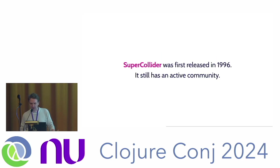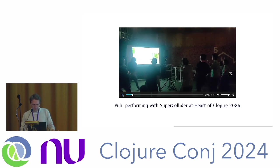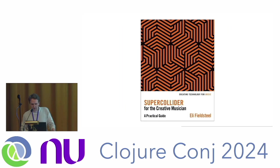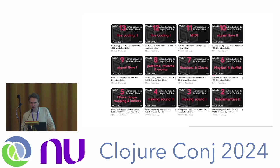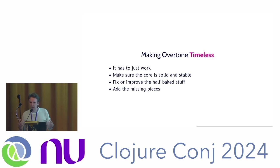So let's talk about timeless software. SuperCollider has been around since the 90s and still has an active community. Just last month at the Heart of Clojure conference, there was a Finnish artist named Pulu who did a live performance using SuperCollider. There's a book about SuperCollider that came out this year, and the same guy makes tons of YouTube videos, which is really great for us and for Overtone. But to make it timeless, it has to just work — it needs a stable, solid core. We need to fix a lot of the half-baked stuff that's in there. The people who originally started Overtone, Sam and Jeff, worked on it really hard for a couple of years — they clearly had a big vision — and then at some point they just dropped it and went elsewhere. We're still figuring out with some of the stuff in there what they were exactly thinking. We need to be backwards compatible the way that Clojure tends to be, but we also need to allow ourselves to imagine what a more complete and more polished Overtone looks like and add those missing pieces.